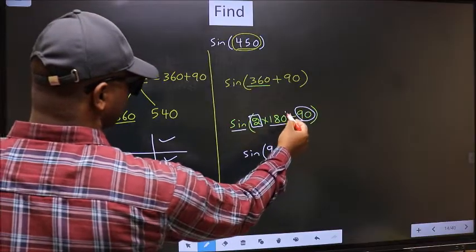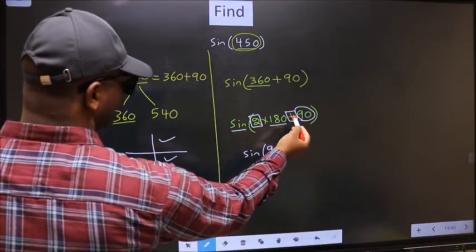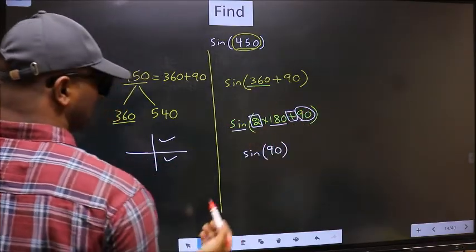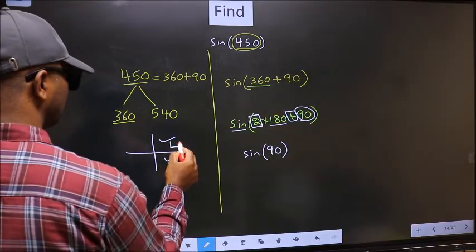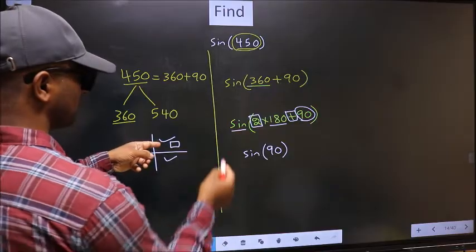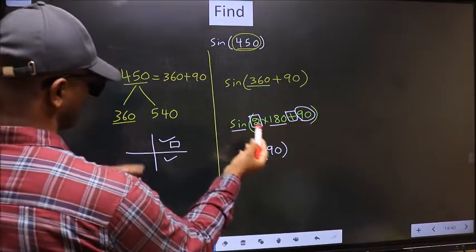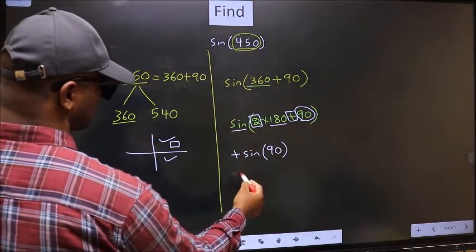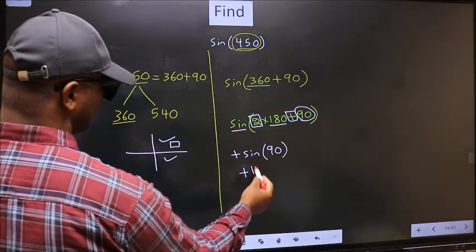So now to select the quadrant, we should look at this symbol. Here we have plus. That means angle lies in the first quadrant. And in the first quadrant, sin is positive. So we should put plus. So plus sin 90 is 1. This is our answer.